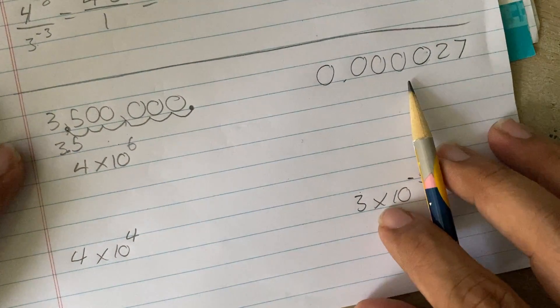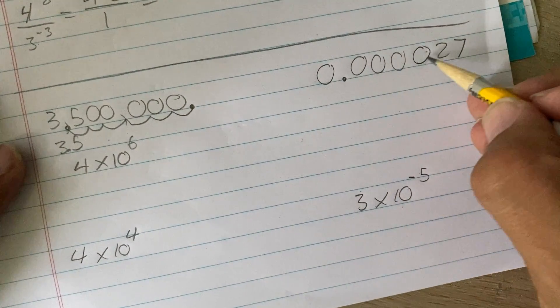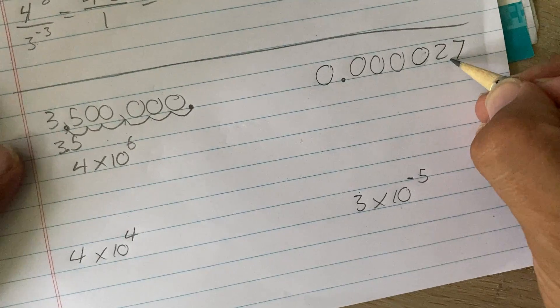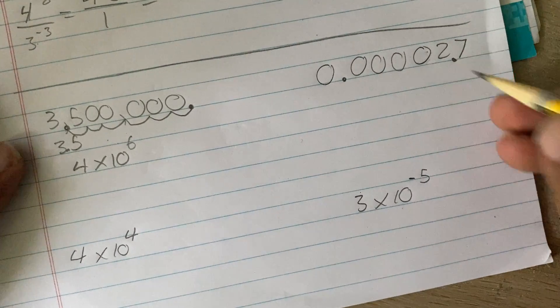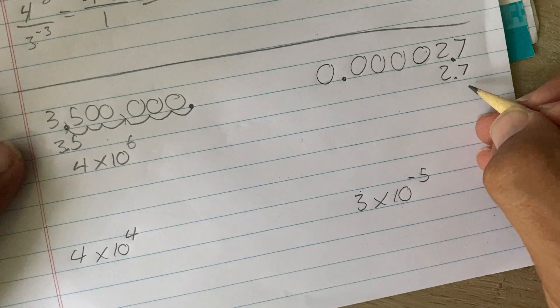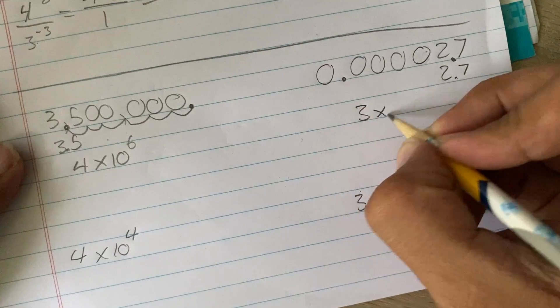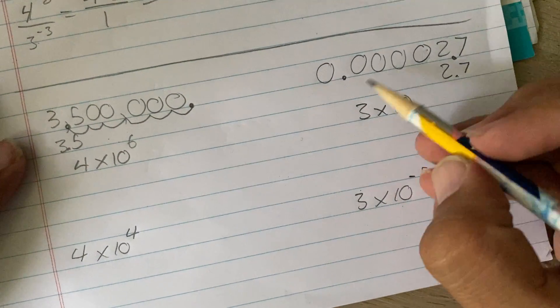This one over here. So, here's the original decimal point, and now I'm going to scan until I run into a natural number, which is a 2 here. So, now I have 2.7. I have to round this. So, it's actually going to end up being 3 times 10 to the power of what?